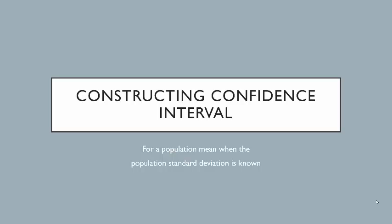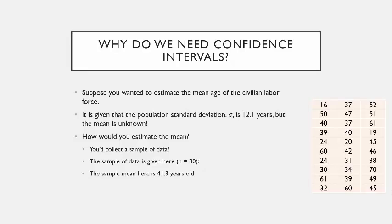In this lecture, I want to talk about constructing a confidence interval for a population mean when the population standard deviation is known. I'm going to introduce this with an example and repeat some of the topics from the previous lecture, which are still important to know.